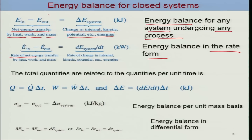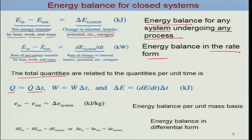In rate form, the rate of net energy transfer by heat, work, and mass should be equal to the rate of change in internal energy, kinetic energy, and other energies of the system. If the rate is given, you can calculate total quantities for a given change in time. For example, Q is Q-dot, the rate of heat transfer, multiplied by delta T. Similarly, you can obtain W, the work done, and the total energy change of the system.